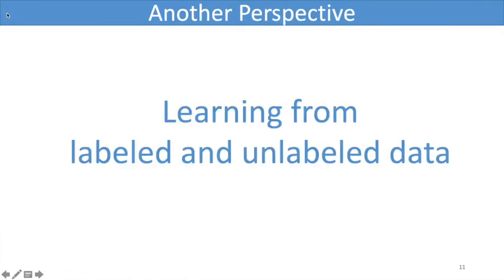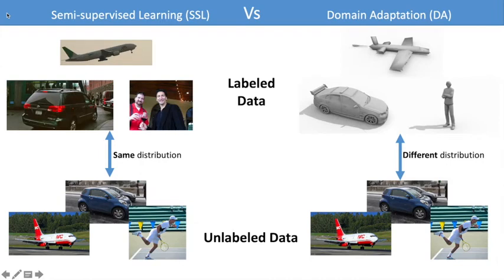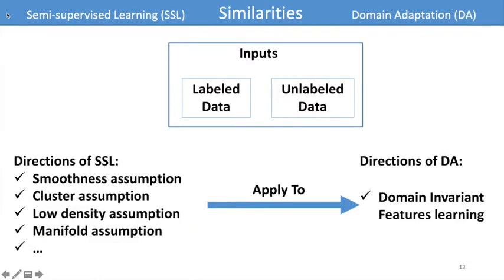To this end, we propose another perspective for the task of domain adaptation: learning from labeled and unlabeled data. It is based on the observation that the task settings of semi-supervised learning and domain adaptation share a high similarity, where the training data includes both labeled and unlabeled data. Given the advantage of semi-supervised learning over models trained on labeled data only, it is a direct idea to apply the methods of semi-supervised learning to domain adaptation tasks.